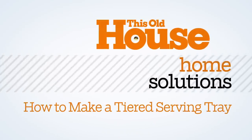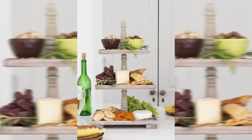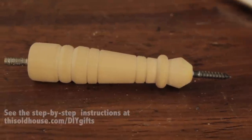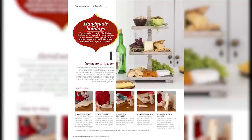Welcome to This Old House. A tiered serving tray makes a great gift, and nobody needs to know you didn't sweat over a lathe to make one. We used turned furniture legs from the home center for the posts.